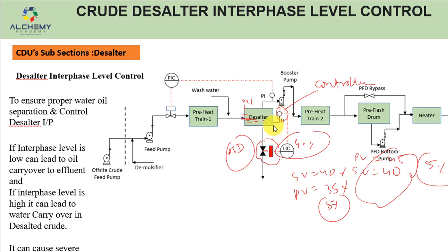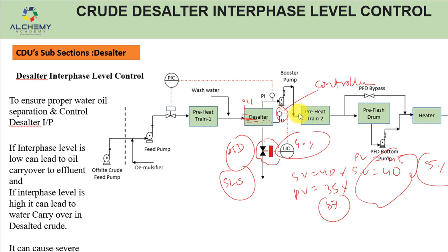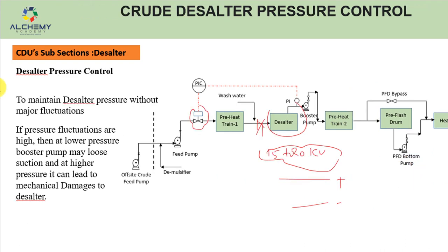If we don't control the desalter level, the consequences are serious. If the interface level is too low, oil can carry over to the effluent and go to the sewer water stripping unit, causing a severe upset there since only sour water should be sent. If the water level is too high, water can carry over to the downstream atmospheric column, causing a water shot and a sudden pressure surge that can create a major upset in the atmospheric column. That is why desalter level control is critical.